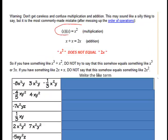Don't get careless and confuse multiplication and addition — this is the most commonly made mistake, other than order of operations. In multiplication, X times X is X squared. In addition, X plus X is 2X. Those are not the same thing — X squared does not equal 2X. So if you have X³ plus X², don't try to say those equal X to the fifth. They don't. X³ and X² are not like terms.